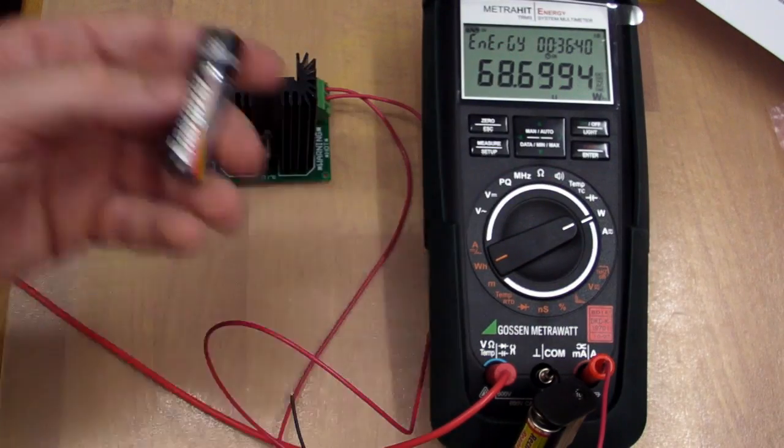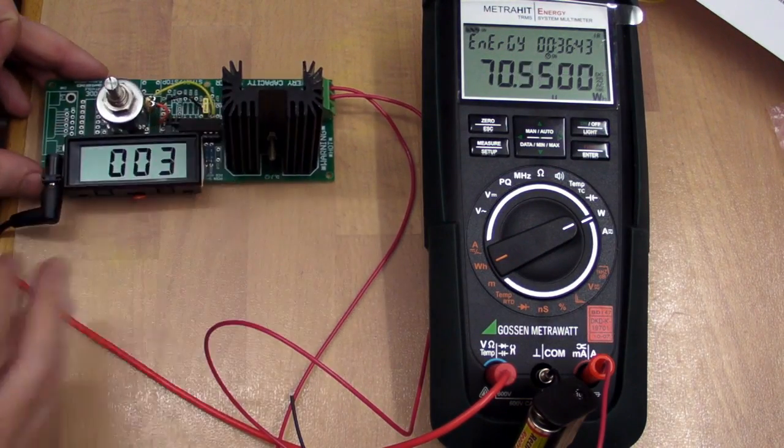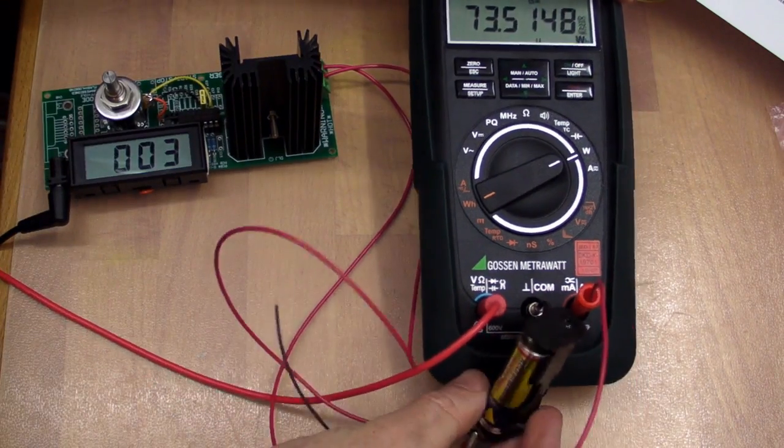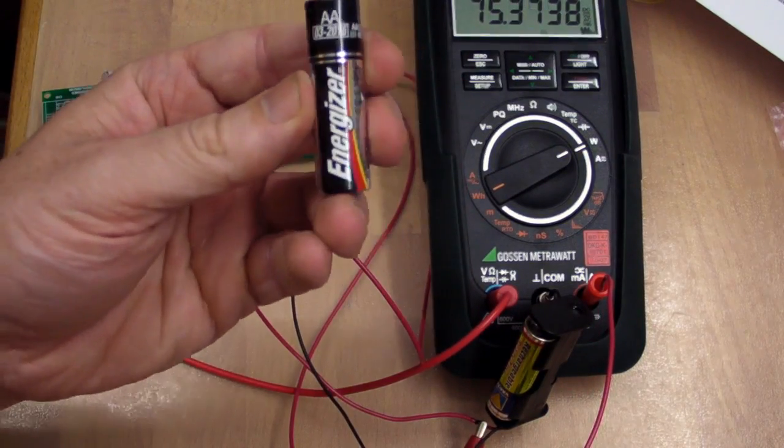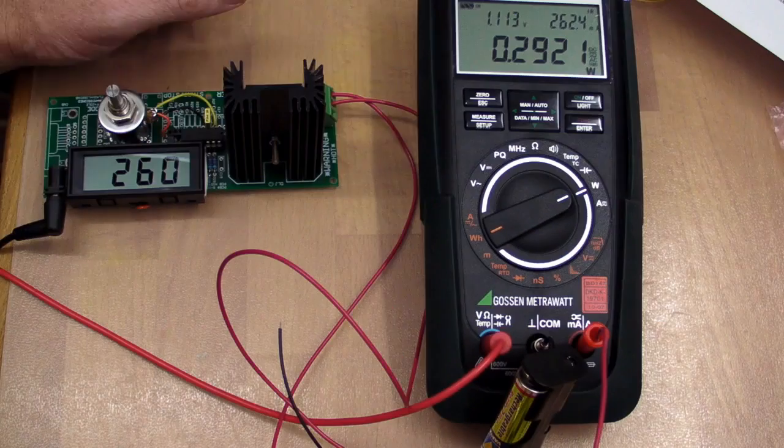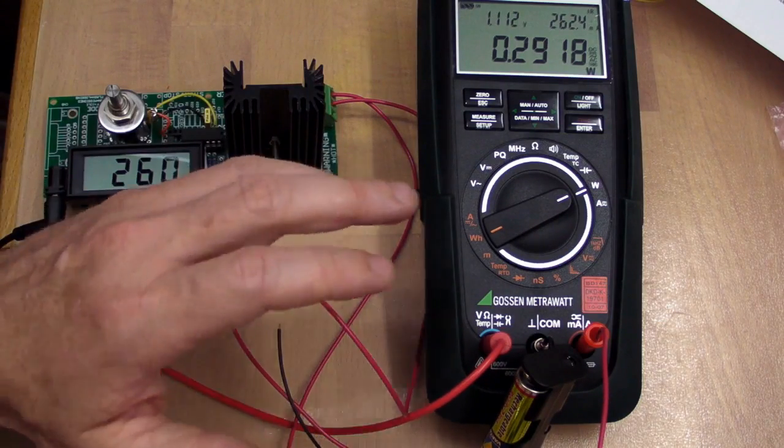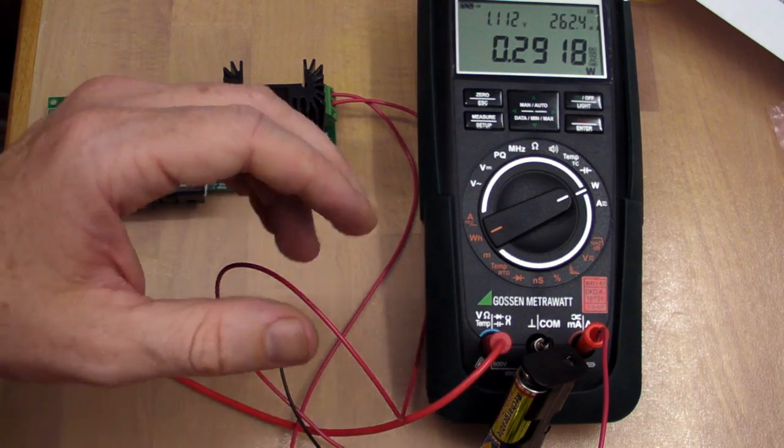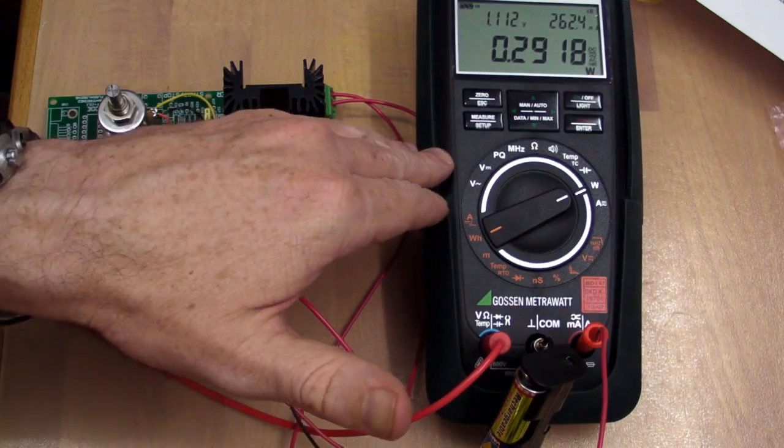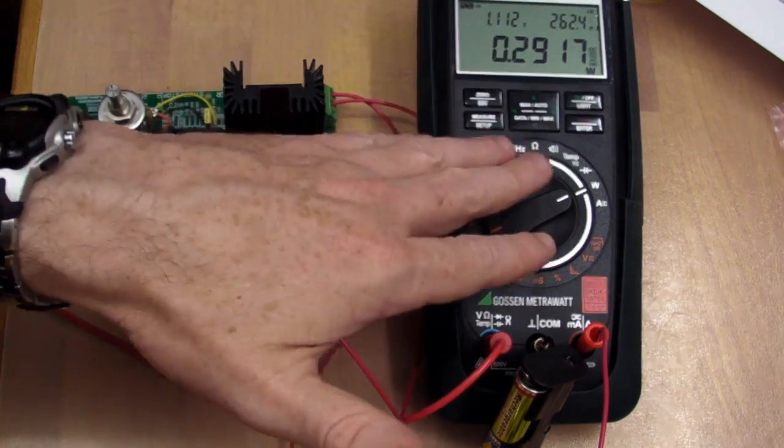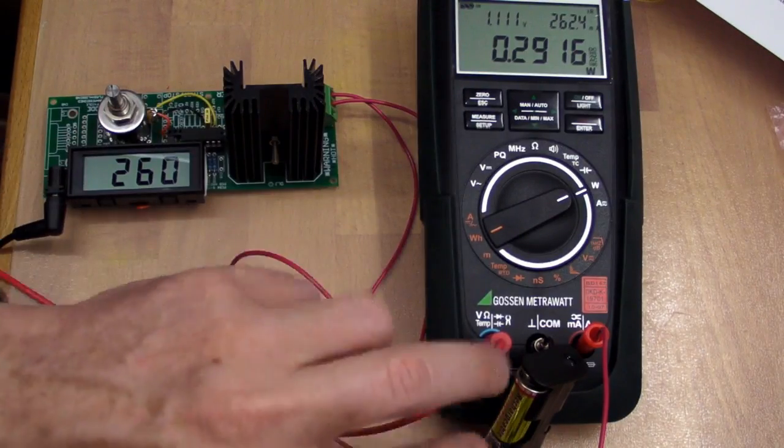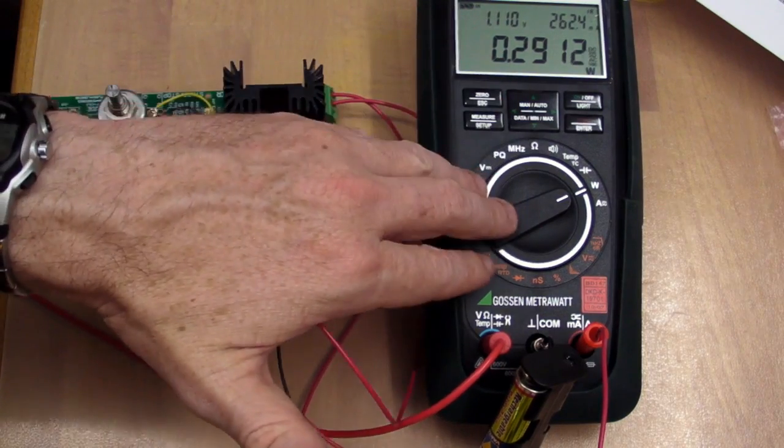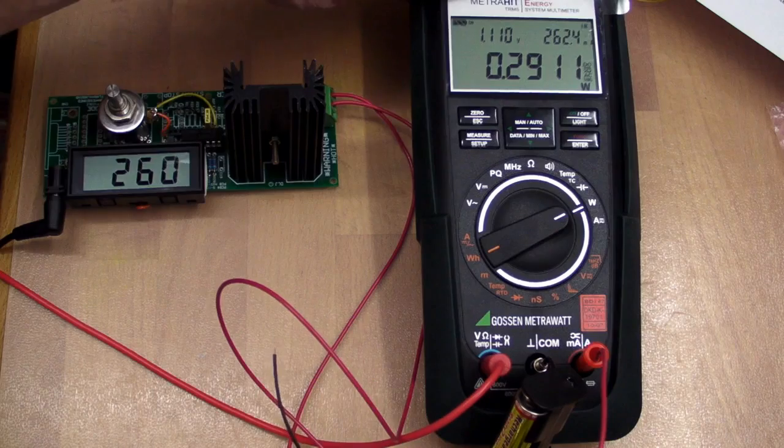So what we're going to do is discharge this cell at a known constant current using my constant current load here which you saw in a previous blog, and I'm going to discharge a cell, a standard AA Energizer alkaline, and see what we get. As I mentioned before, there's two ways to actually measure the watt-hour capacity of a battery. One is to get the characteristic curve and then integrate it over time and do some math and actually integrate it, or you can log the voltage and the current directly on the cell over time, and that will build up a watt-hour figure for you. And that's exactly what the METROHIT energy meter does. So let's give that a go.